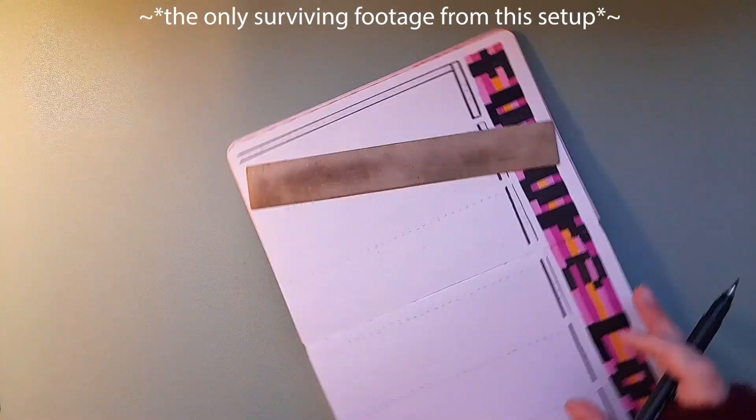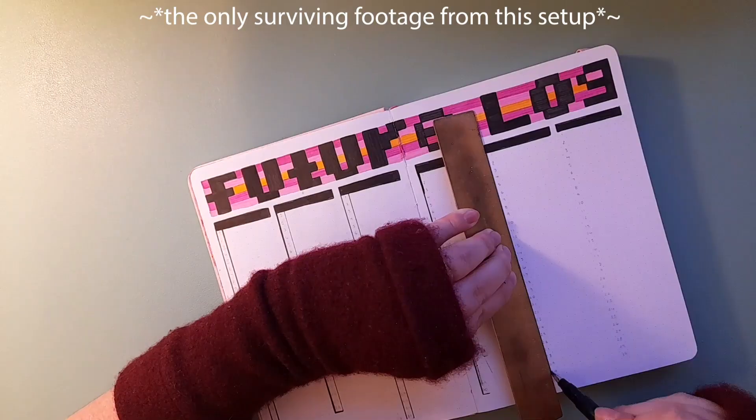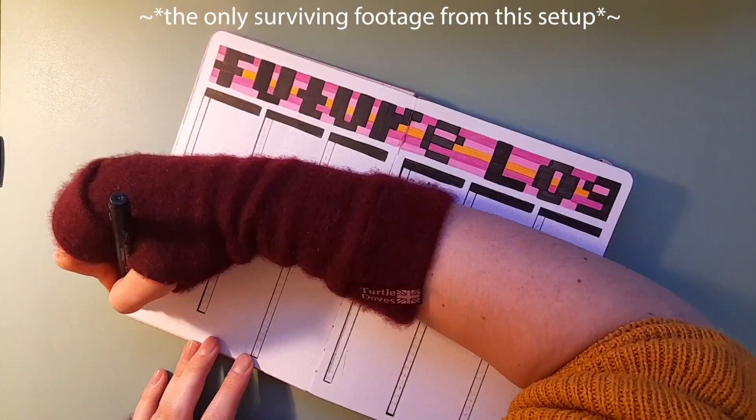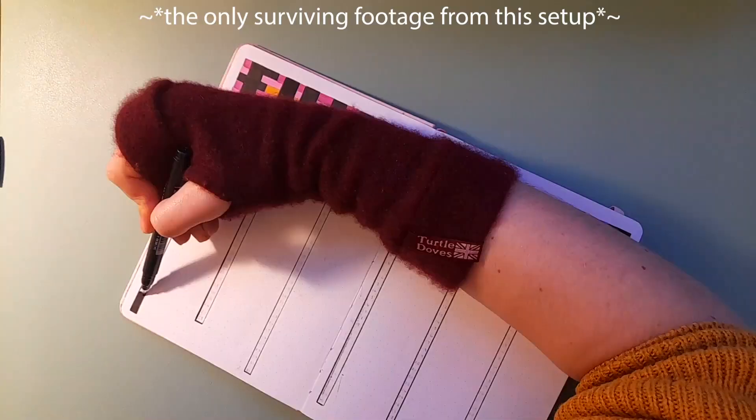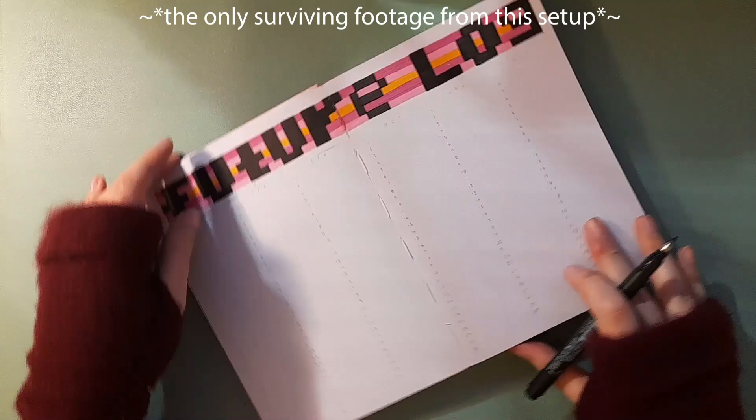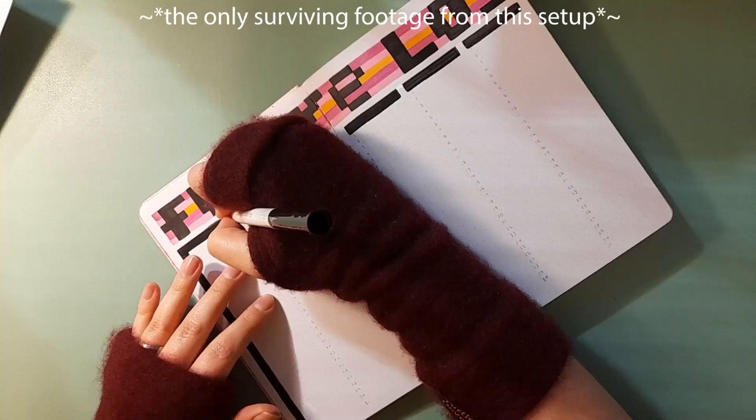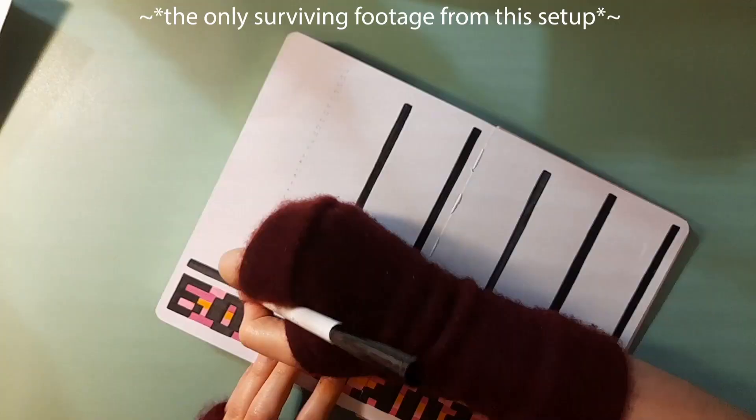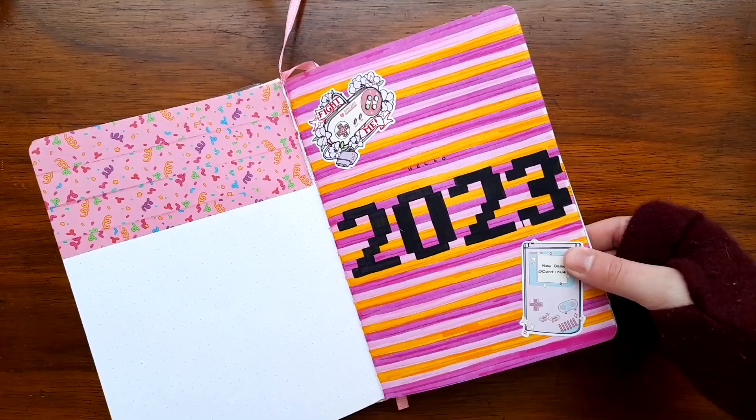I also have a year in Pixels page which is set up to track the Comic-Cons that I attend this year. I haven't been able to go to one yet but fingers crossed I can go soon. Opposite that page I've made a pocket page that holds my grid spacing ruler and this one's for me to put tickets in or wristbands or business cards, little things like that that I get from cons as kind of a keepsake envelope.